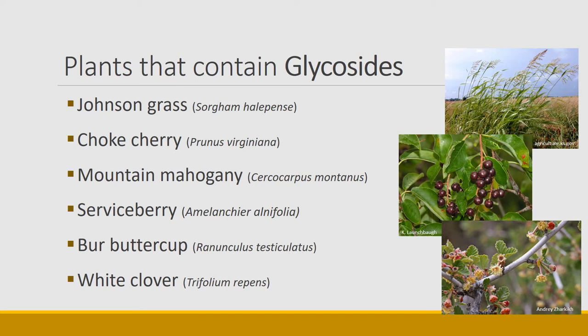Chokecherry, Mountain Mahogany, and Serviceberry also have that same characteristic — interestingly, they're all members of the Rosaceae family, and many members of that family have cyanogenic glycosides. There is an old lore that in the Egyptian and Roman era, the way to punish some people was to give them what they called the penalty of the peach — a peach is also a member of the Rosaceae. They would grind up the seeds and give them to people, and the people would die from the cyanogenic compounds inside the seeds of Rosaceae fruits.